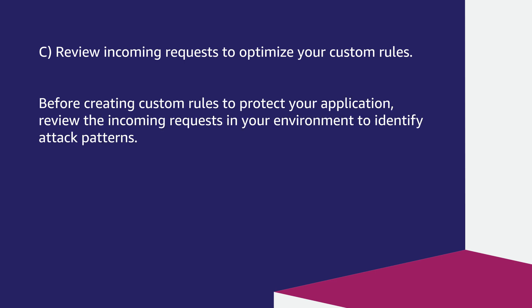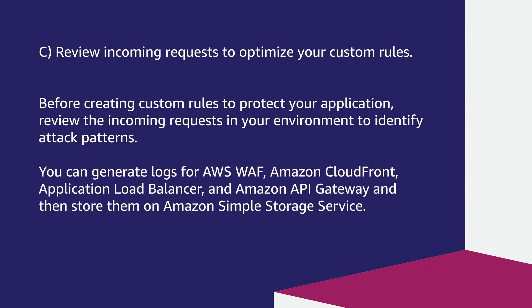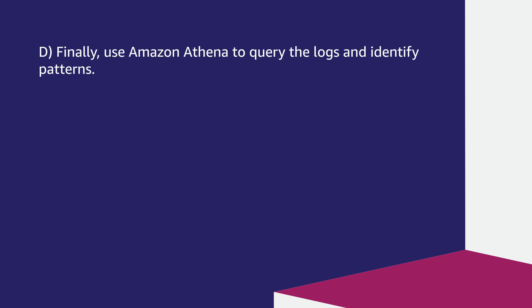Review incoming requests to optimize your custom rules. Before creating custom rules to protect your application, review the incoming requests in your environment to identify attack patterns. You can generate logs for AWS WAF, Amazon CloudFront, Application Load Balancer, and Amazon API Gateway, and then store them on Amazon Simple Storage Service. Finally, use Amazon Athena to query the logs and identify patterns.